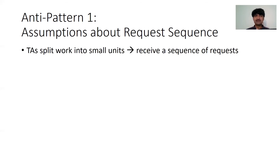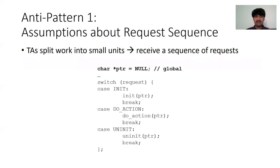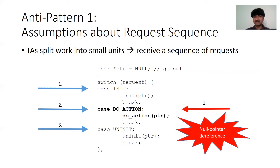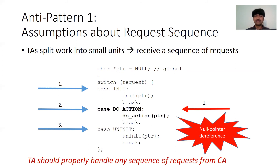The first pattern was that TAs made assumptions about the request sequence coming in from the client application. TAs usually split work into very small chunks so as not to monopolize the CPU, receiving a series of requests for simple actions. A benign client sends these requests in order, but a malicious client is not constrained to do so. A malicious client in the normal world could send an out-of-order request, which the TA may not handle properly — it could crash or, worse, be exploitable. The takeaway is that TAs should properly handle any sequence of requests without assuming a particular order from the CA.